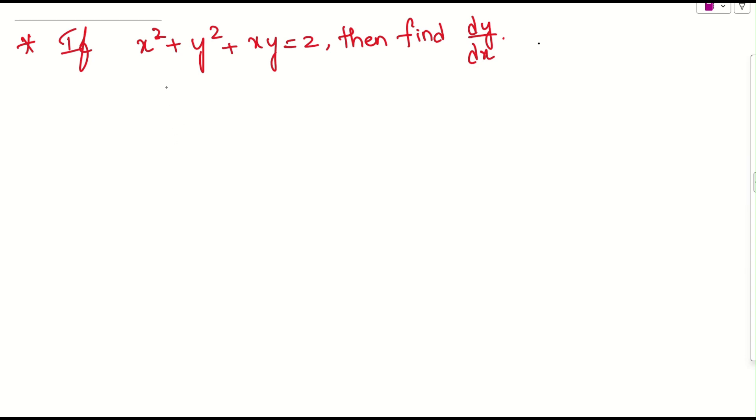See, what was the question given here? If x square plus y square plus xy equals 2, then we need to find dy by dx.